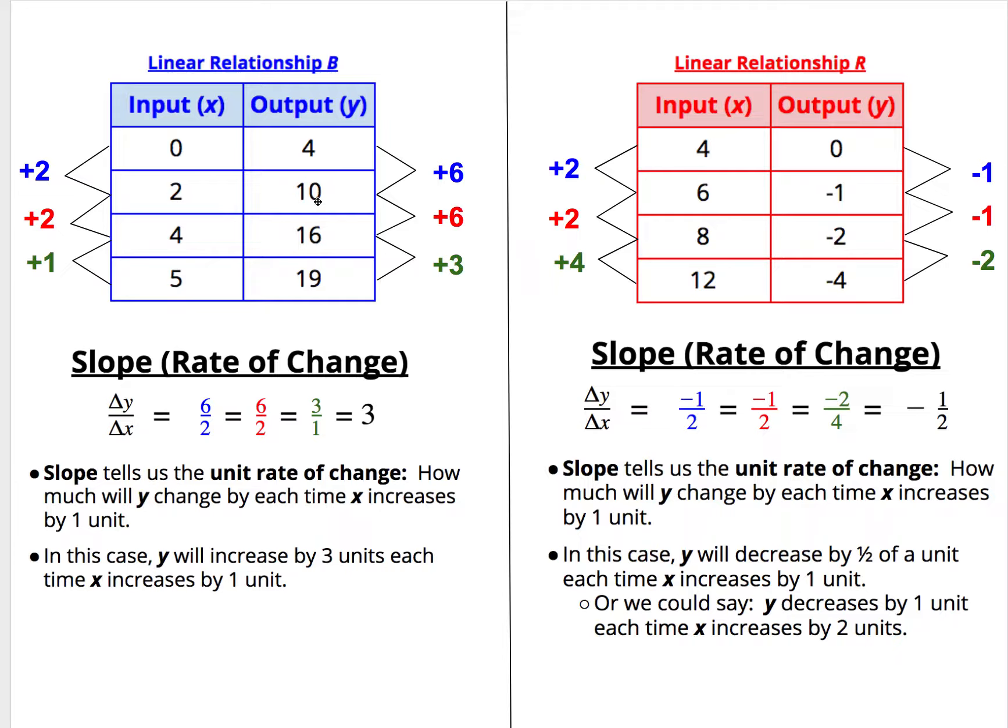From the second row to the third row, we see again y goes from ten to sixteen, that's an increase of six units, while the x goes from two to four, another increase of two units, or a slope of six over two.